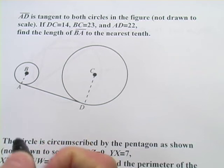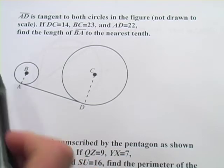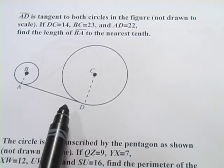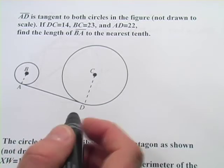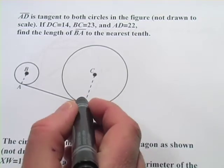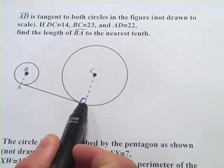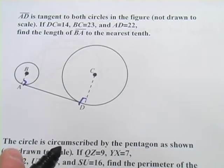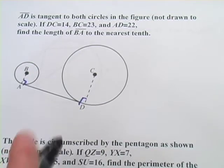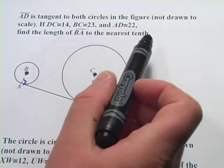In these problems we're dealing with some of the properties of tangent lines. In this first one it says AD is tangent to both circles in the figure. One of the properties of a tangent line is that it forms a right angle at the point of tangency with a line drawn to the center. So what we know is both of these angles are right angles. That's what we get from the property of a tangent.